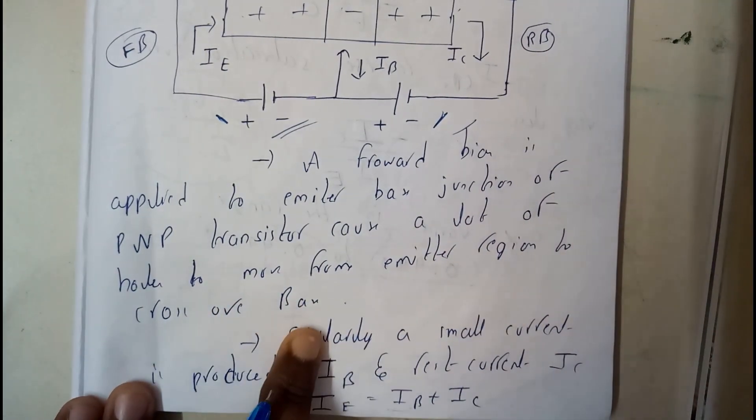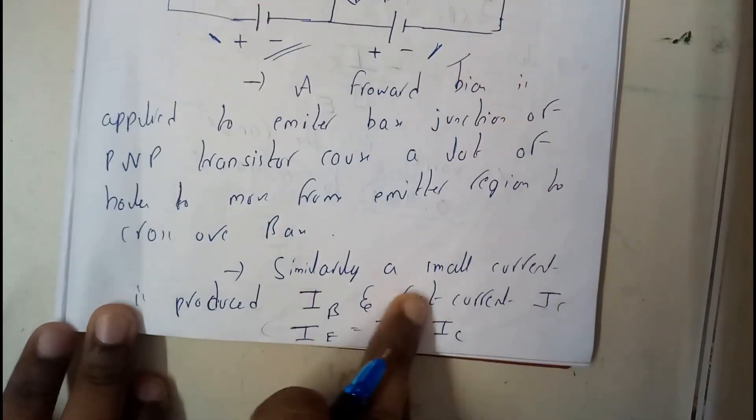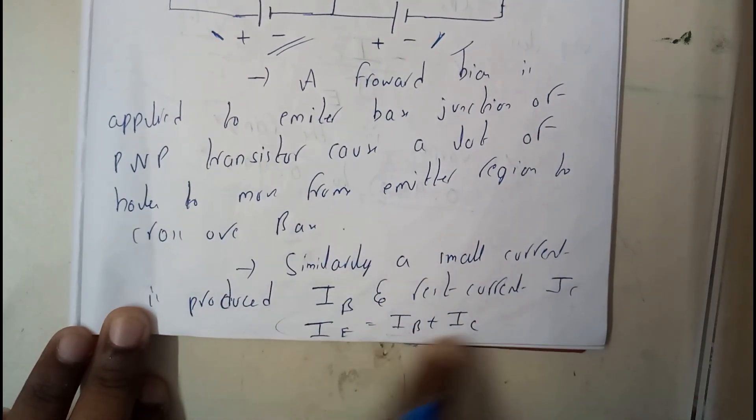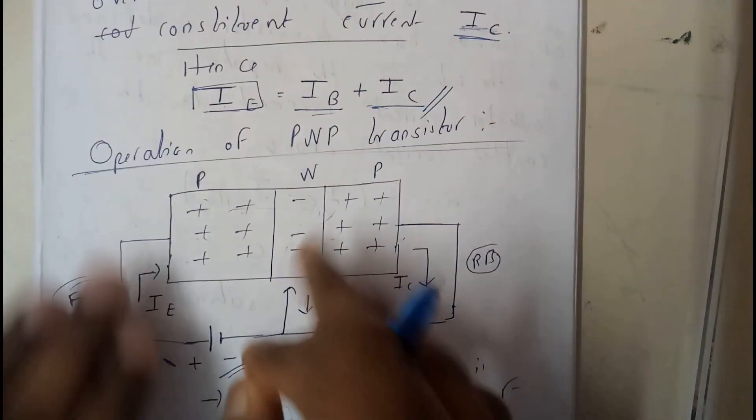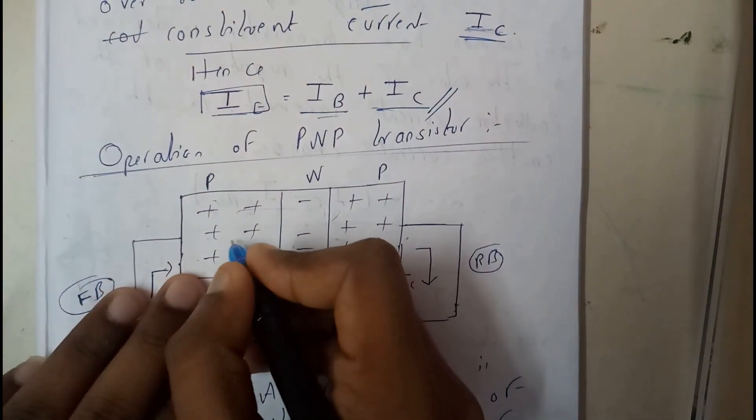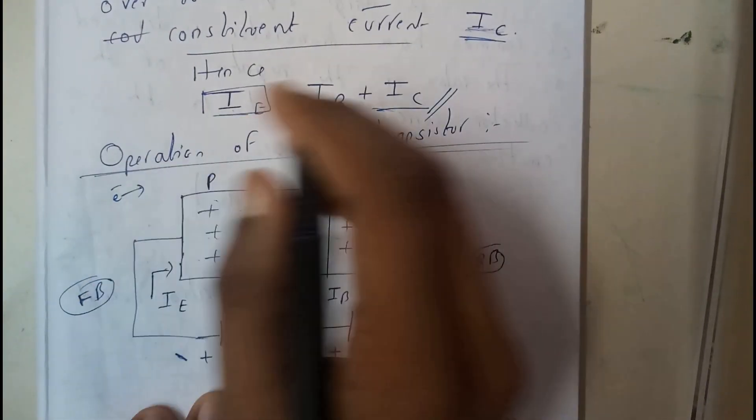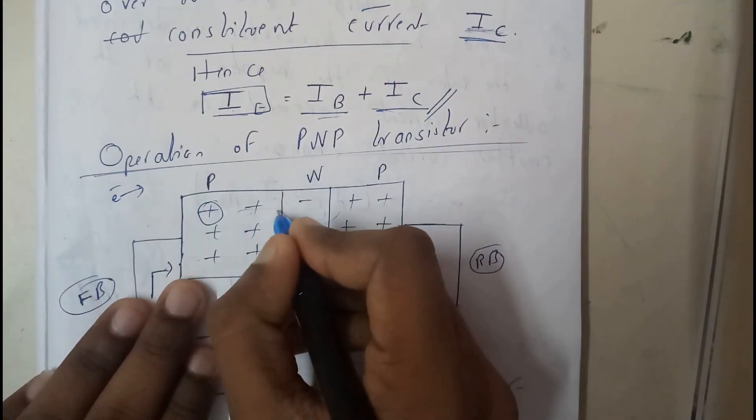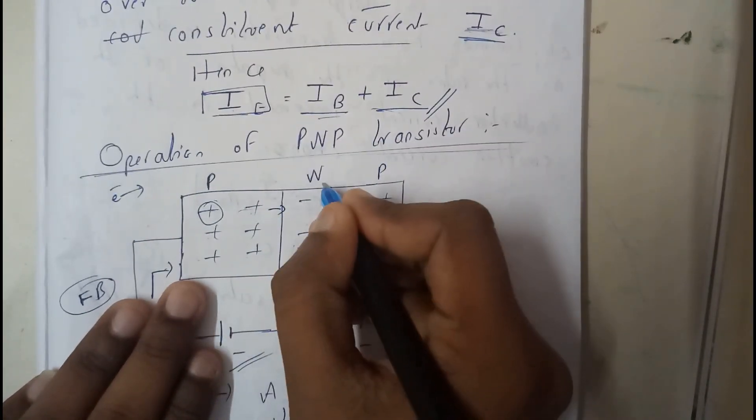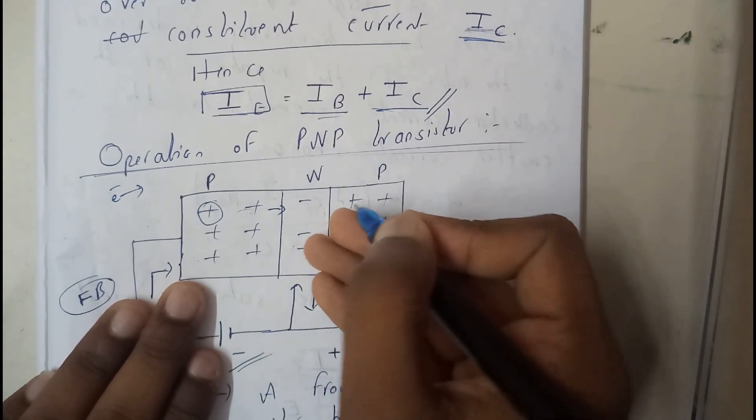Similarly, a small current is produced, I_B, and the rest current I_C. As I have just told you in the previous tutorial, electrons moved. Here the holes start to move from here, so once they reach the base junction, the base part...